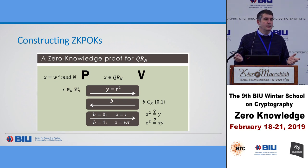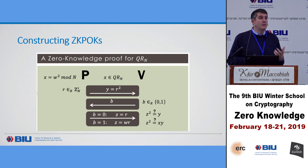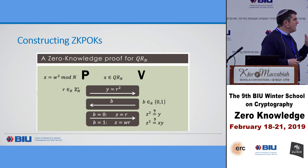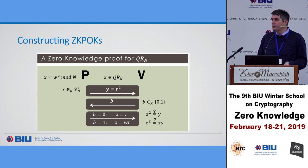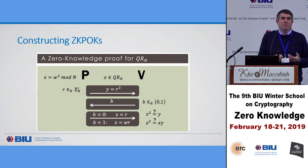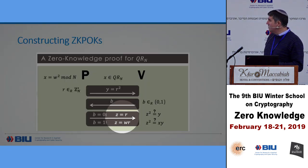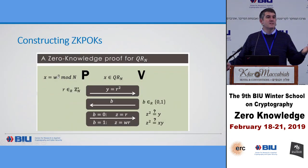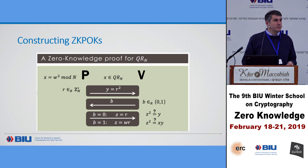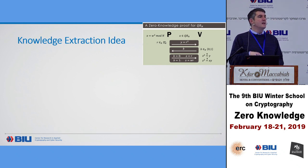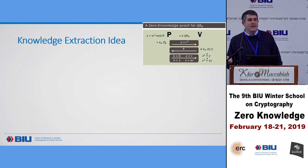That's not an argument we can use for knowledge soundness though, because it might be that x is a quadratic residue but I have no idea of its square root. If I don't know the square root, I should not be able to prove this. We want it to only be possible to prove this if I actually know the value w. Here's the idea behind knowledge extraction: the extractor K invokes P star and receives some value Y.